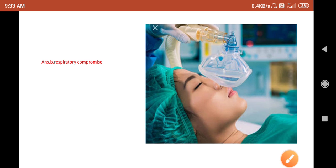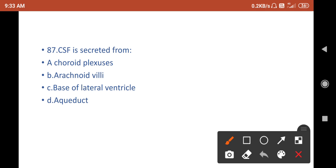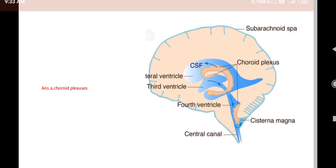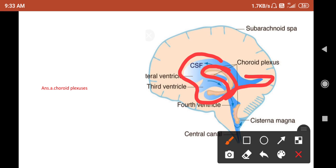Question 7: CSF is secreted from — A) choroid plexus, B) arachnoid villi, C) base of lateral ventricle, D) aqueduct. The answer is A — choroid plexus. Here you can see the choroid plexus and CSF production diagram.